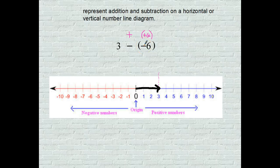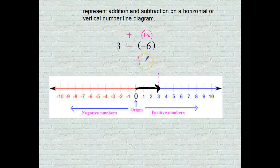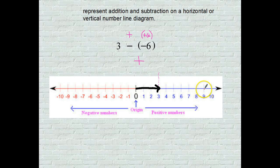Subtracting a negative really means just plain old adding, and we know we're going to go to the right. So we're going to go right 6 units: 1, 2, 3, 4, 5, 6.